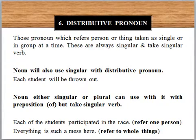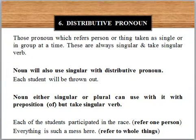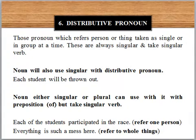A noun — either singular or plural — can be used with a distributive pronoun after the preposition 'of,' but a singular verb is used. This means that if you use the preposition 'of,' then the noun after it can be plural or singular, but the verb remains singular. For example, 'participated' is singular as it is used according to 'each.'